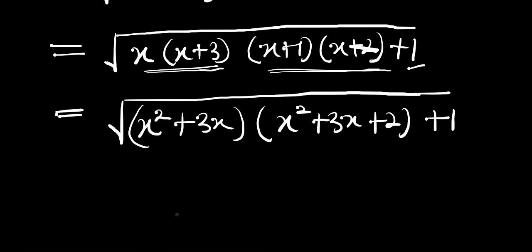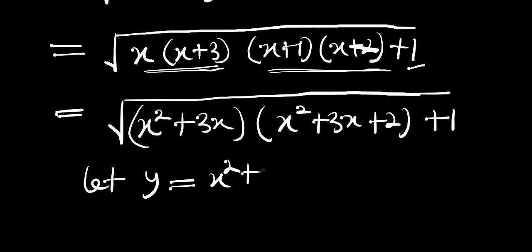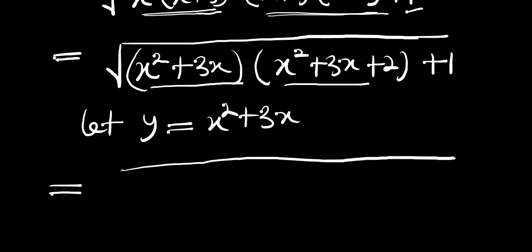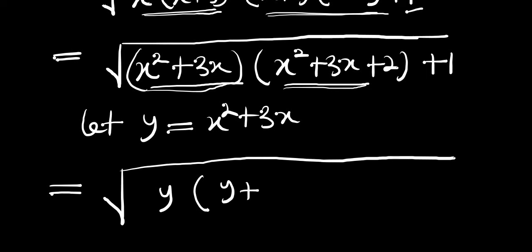We have x squared plus 3x here, so let y equal x squared plus 3x. That means we are going to have y squared plus 2y plus 1.